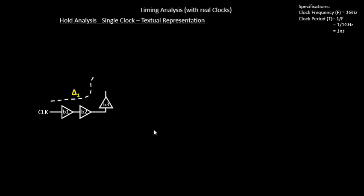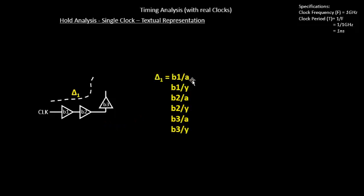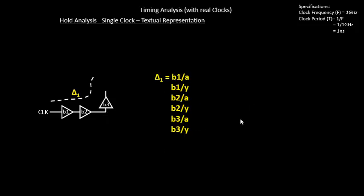The launch clock path looks something like this: B1 of A (net delay) + B1 of Y (cell delay) + B2 of A (net delay) + B2 of Y (cell delay), and so on. We already covered this for setup time.